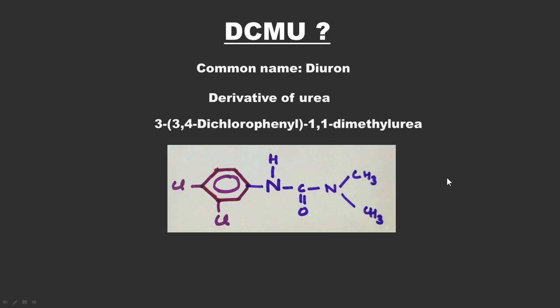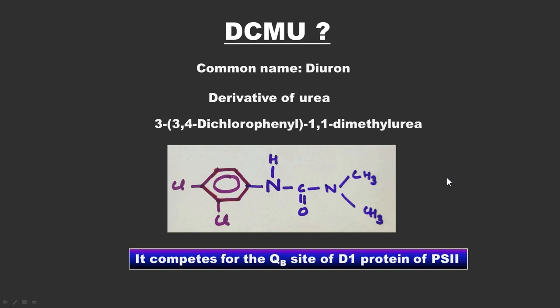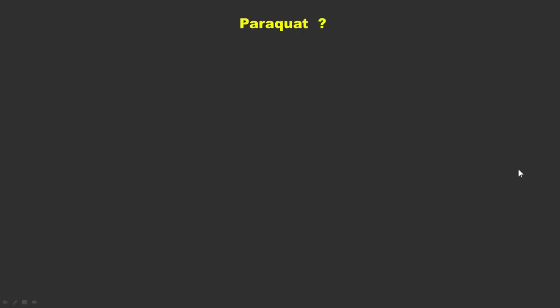DCMU competes for the QB site of the D1 protein of Photosystem 2. There are two quinones present in the reaction center of Photosystem 2: QA and QB. QA is present on the D2 protein and QB is present on the D1 protein.